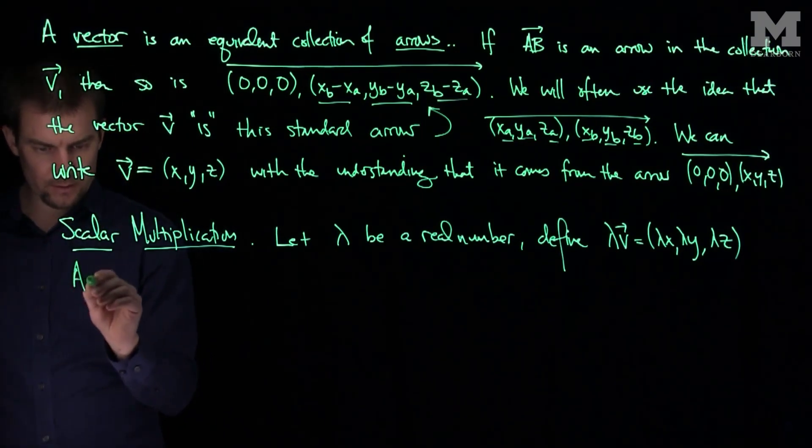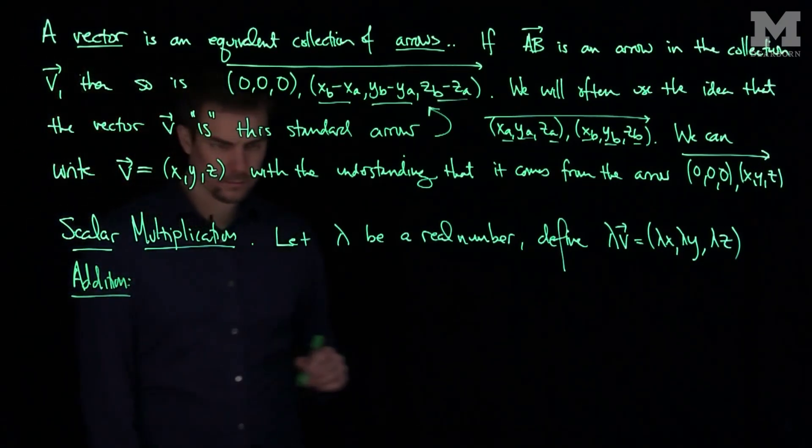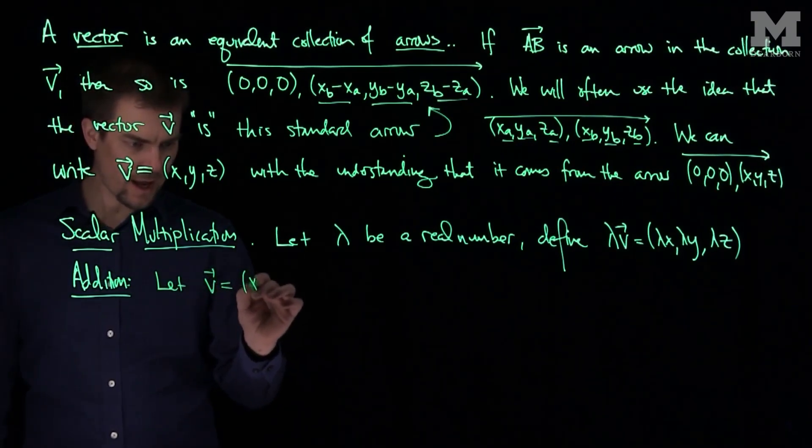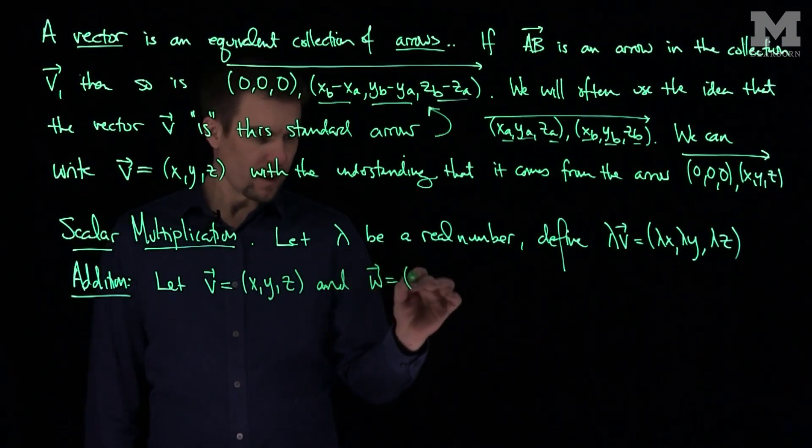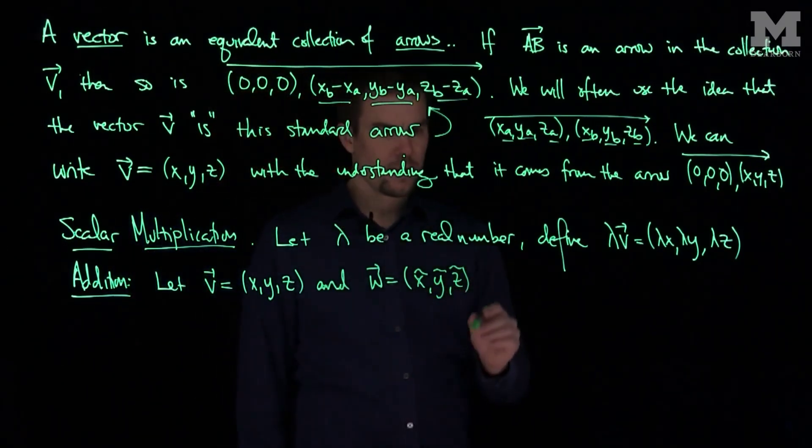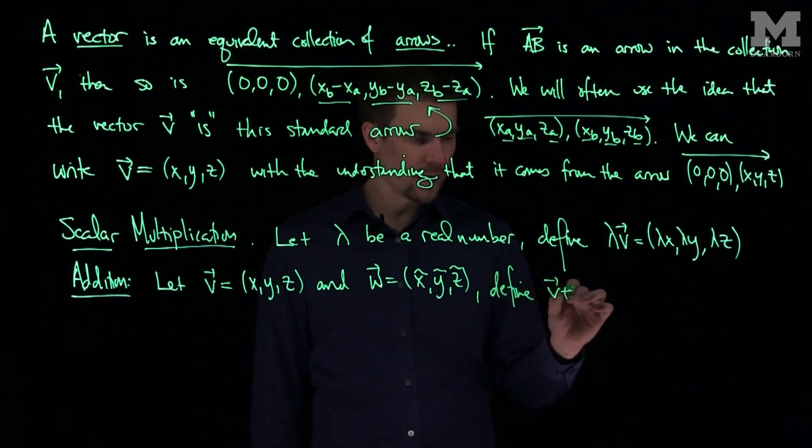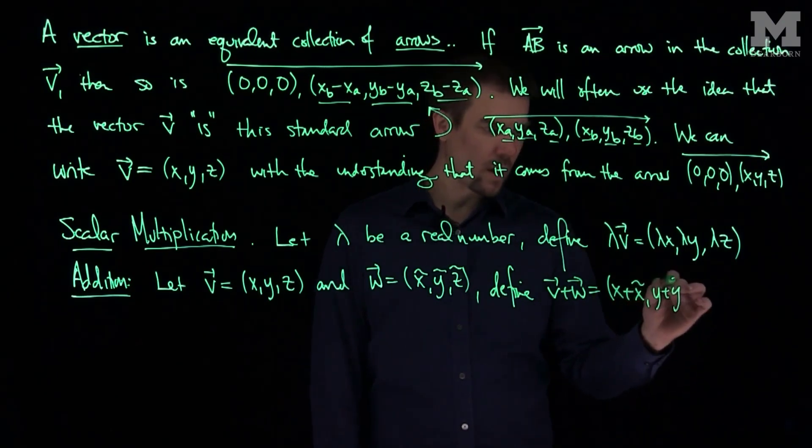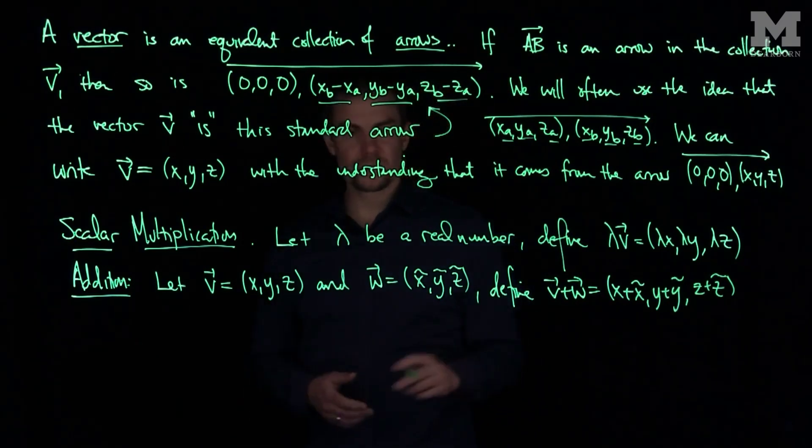We can define addition of vectors. Let V be (X,Y,Z) and W be (X-tilde, Y-tilde, Z-tilde). Then define V plus W as (X plus X-tilde, Y plus Y-tilde, Z plus Z-tilde).